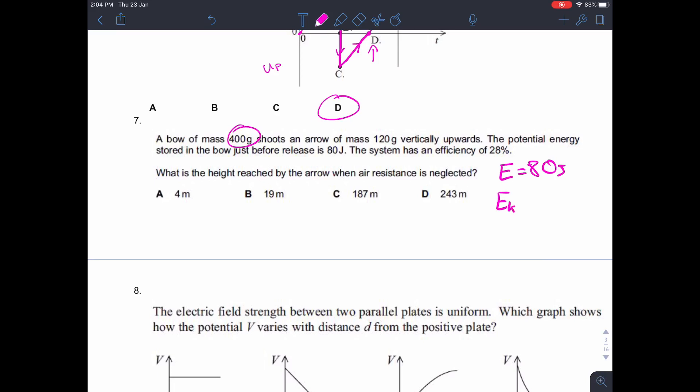So kinetic energy of the arrow, when it is leaving the bow, is 80 joules. And all of that is converted into potential energy at the top of the arrow's flight. So EP at the top is 80 joules. Now we know that EP equals MGH, which in this case is 0.12 because it's 120 grams, times 9.81 times H equals 80. And if you multiply that out, that gives you an answer of B, 19 metres.